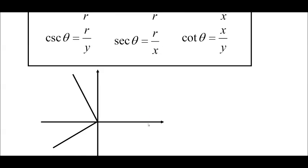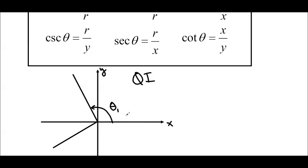If I have any angle in our coordinate grid — this is the x and this is the y — I'm starting at my initial arm, which is the positive x-axis. I start from there and go anywhere, let's call this theta 1, and I can still find the sine, cosine, and tan. That's really important because in quadrant 1, they're all acute angles, and you can make a right angle triangle with acute angles. But you can't make a right angle triangle with an obtuse angle — you can't have one right angle and one obtuse angle because that adds up to more than 180.